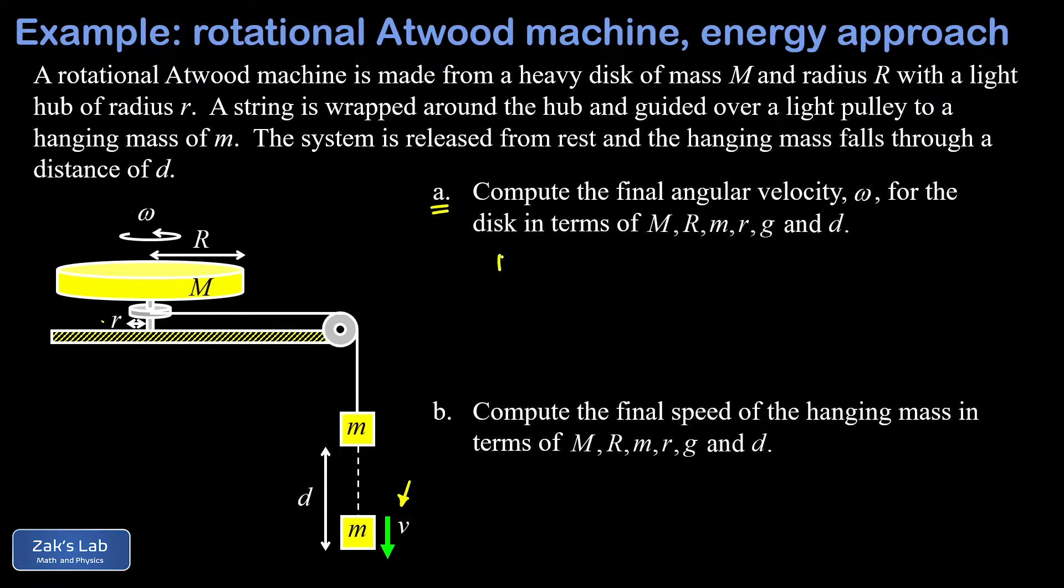To get into part a of the problem where we're trying to find the final angular speed of the disk, we're going to start from the beginning by stating energy conservation: E initial equals E final.